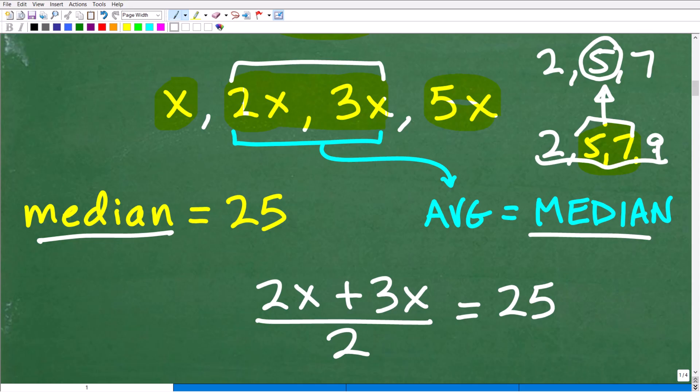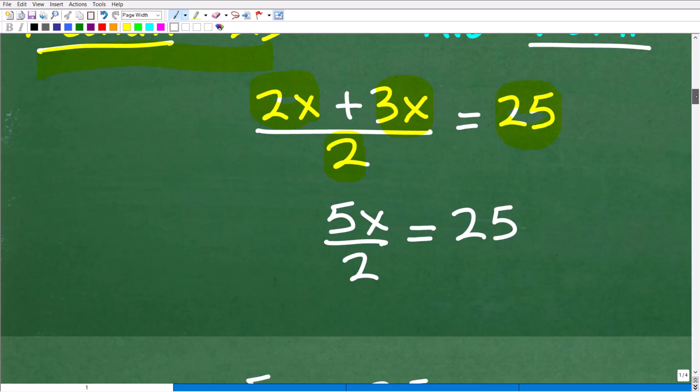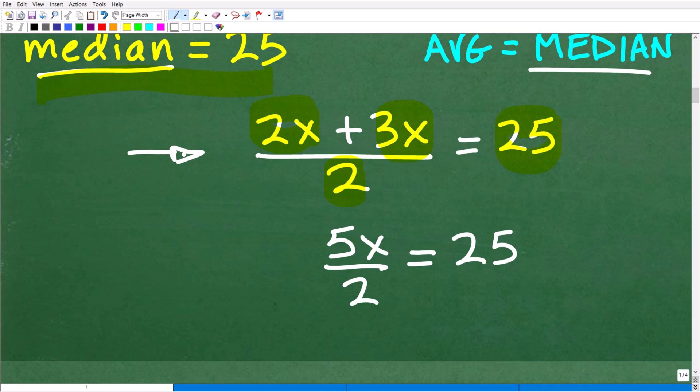Now we're going to go ahead and use some algebra. We know the median is 25. To find the median here, I would take the average of these two numbers. We don't know what they are, but we can certainly write a nice, lovely algebra equation to represent what's going on. So 2x plus 3x divided by 2. I've got two numbers. I'm going to take the average of these two numbers. So 2x plus 3x, divide that by 2. That is going to be 25 or the median. So now, this really comes down to just solving this lovely equation right here. So 2x plus 3x, of course, will be 5x over 2, and that's going to be equal to 25.